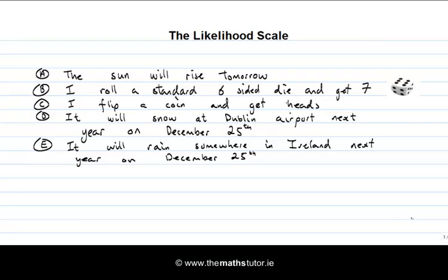Here are five different possible events with different likelihoods associated to them. Event A: the sun will rise tomorrow — most people would agree that event is a certainty. Event B: I roll a standard six-sided die and get seven — most people would agree that's impossible. Event C: I flip a coin and get heads. A standard coin has two sides, heads and tails, and getting heads seems about as likely as it is unlikely — we'd often say the likelihood is evens, or 50/50.